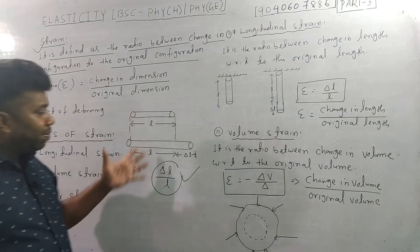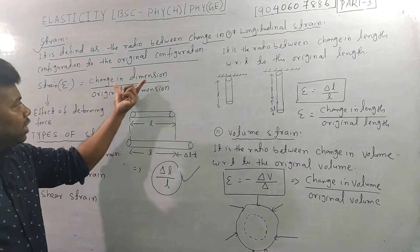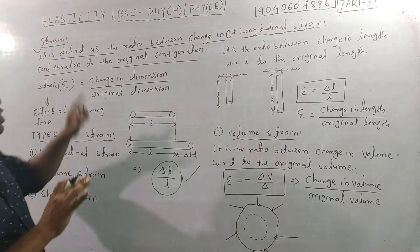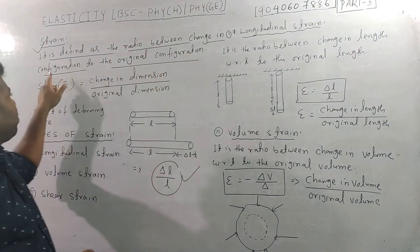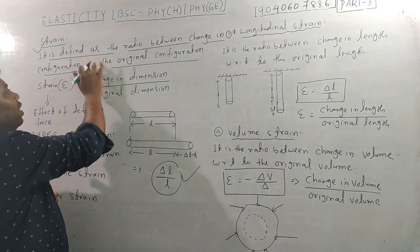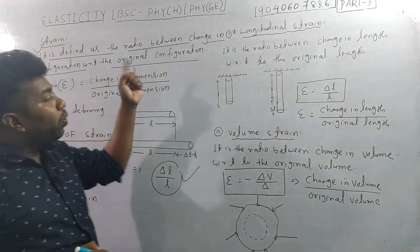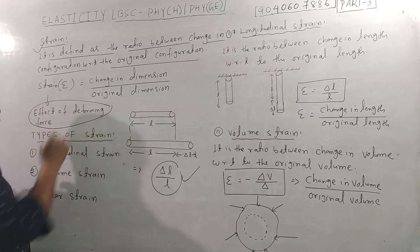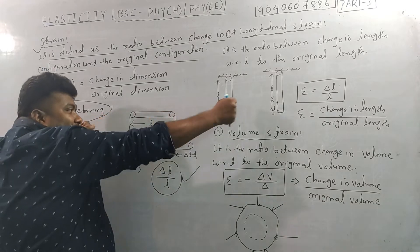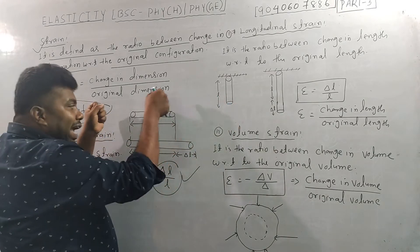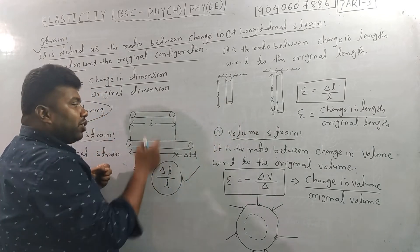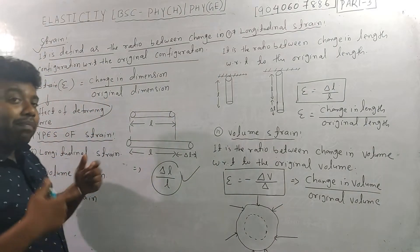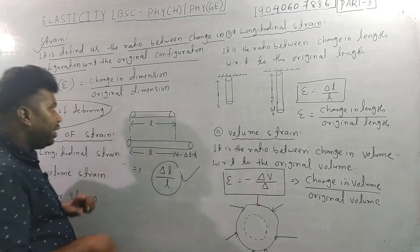I hope, friends, you now know. What do we call the strain? Change in configuration, which means change with respect to the original. Strain is defined as the ratio between change in configuration with respect to the original configuration. Strain is the effect of the deforming force. If we apply the deforming force, the strain is produced.